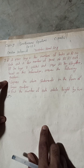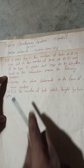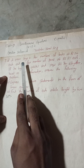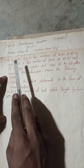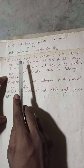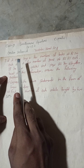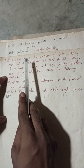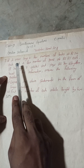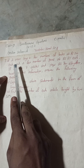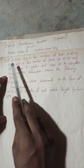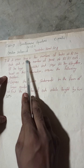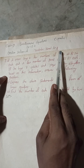Hi everybody, welcome back to Vimalsarji YouTube channel. This is question number 3D, creative section B. All the solutions have been uploaded in my YouTube channel — you can check the playlist. This is 3D of creative section A, class 9, simultaneous equations, exercise 12.2, compulsory maths.